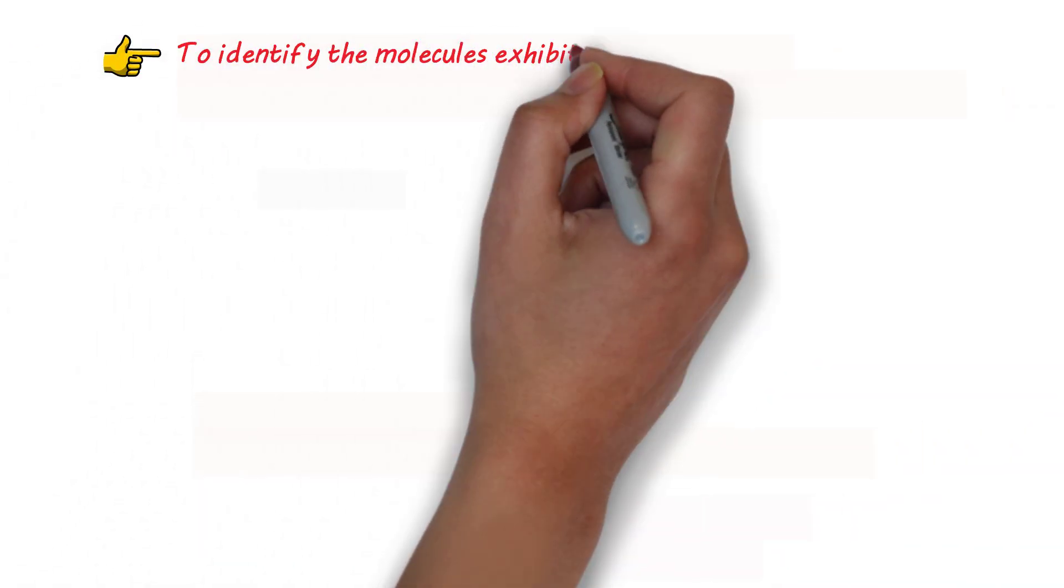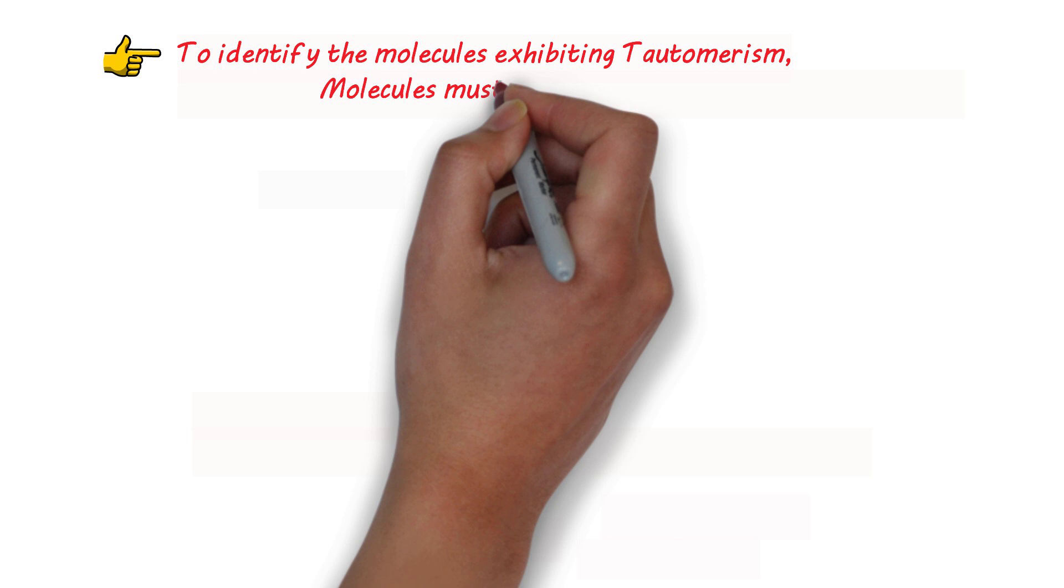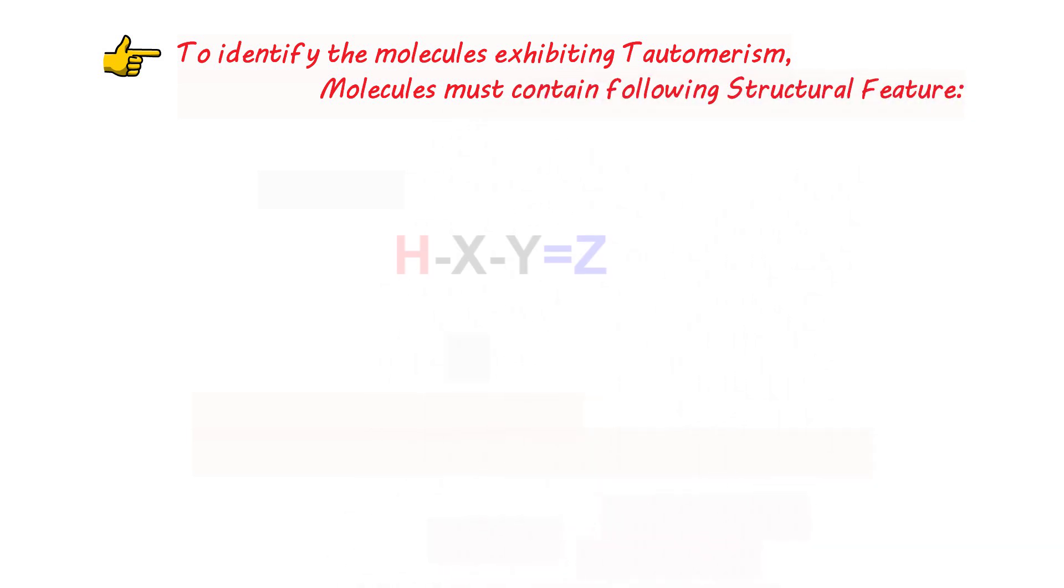Now to identify molecules exhibiting tautomerism, molecules must contain the following structural feature: X-Y=Z, where H is the hydrogen atom, X is an atom to which hydrogen is attached and must be sp3 hybridized, and there must be a double bond between Y and Z. If Y=Z is a functionality, then hydrogen will be an alpha hydrogen.